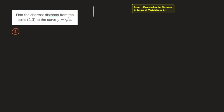If I draw an xy grid here, that's my y-axis and x-axis. The curve y equals to the square root of x would start at 0 and increase very slowly. The point with coordinates 2, 0 is right here. If I take a generic point on the curve with coordinates x and y, then what we're trying to minimize is the distance from that point to the point with coordinates 2, 0 — that's the length of this yellow segment.